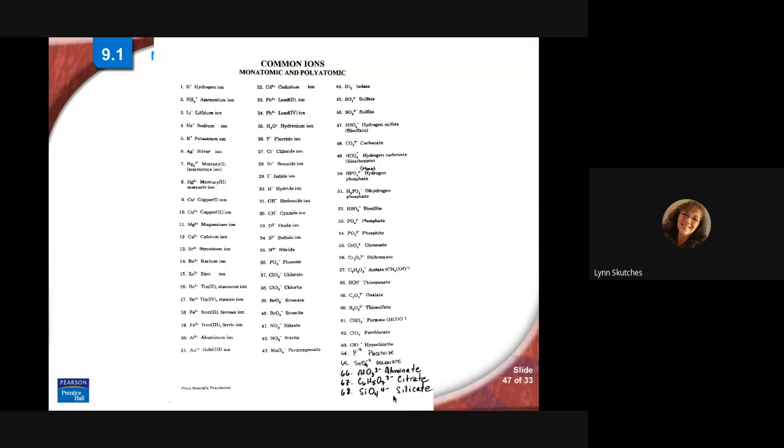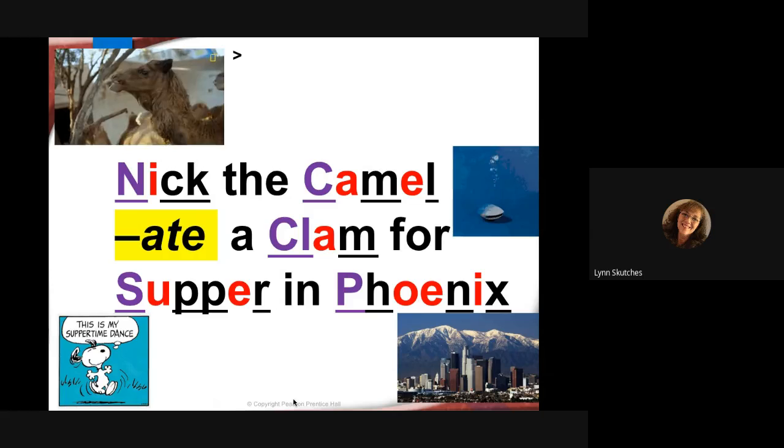You have this list, this big long list of 68 different ions and it's not complete. Some of these are monatomic, which means you can figure it out from where they are on the periodic table for most of them, and then these last two columns have a lot of polyatomics, more than one kind of atom stuck together.